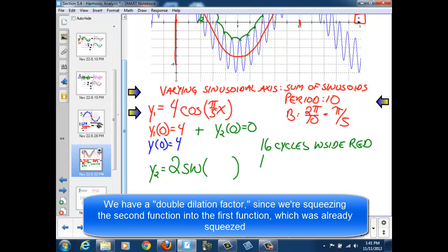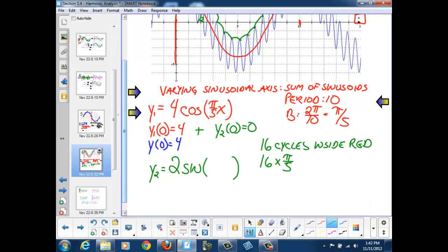So I'm going to take 16 and multiply by pi over 5 to get an ultimate dilation factor for the smaller graph. So that would tell me that my graph is now 2 sine 16 pi over 5 times x.